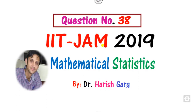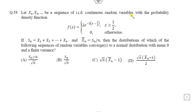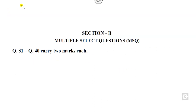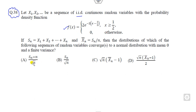Hello students, welcome to the IIT JAM Mathematical Statistics solution. In this lecture we will see how you can solve question number 38, which is related to IIT JAM distributions. Since this is question number 38 from Section B, a correct answer gives you two marks. Questions 31 to 40 are all multiple select questions, meaning there may be more than one correct option. I will give you a one-minute video to show how you can solve this within one minute.